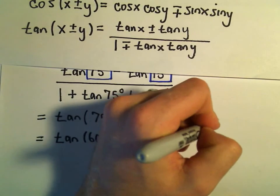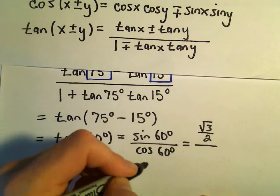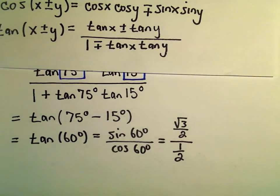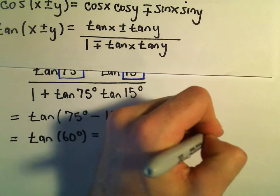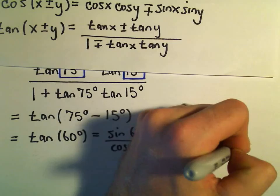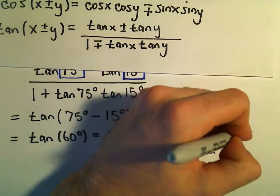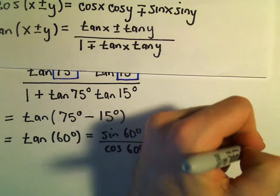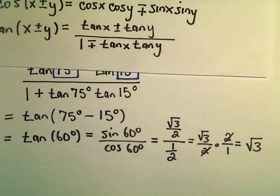Sine of 60 degrees is going to be root 3 over 2. Cosine of 60 degrees is going to be 1 half. You can always simplify this a little bit. We can leave the numerator alone. We can flip the denominator and multiply. So in this case, the 2s will simply cancel out. And we'll be left with our solution of square root of 3.